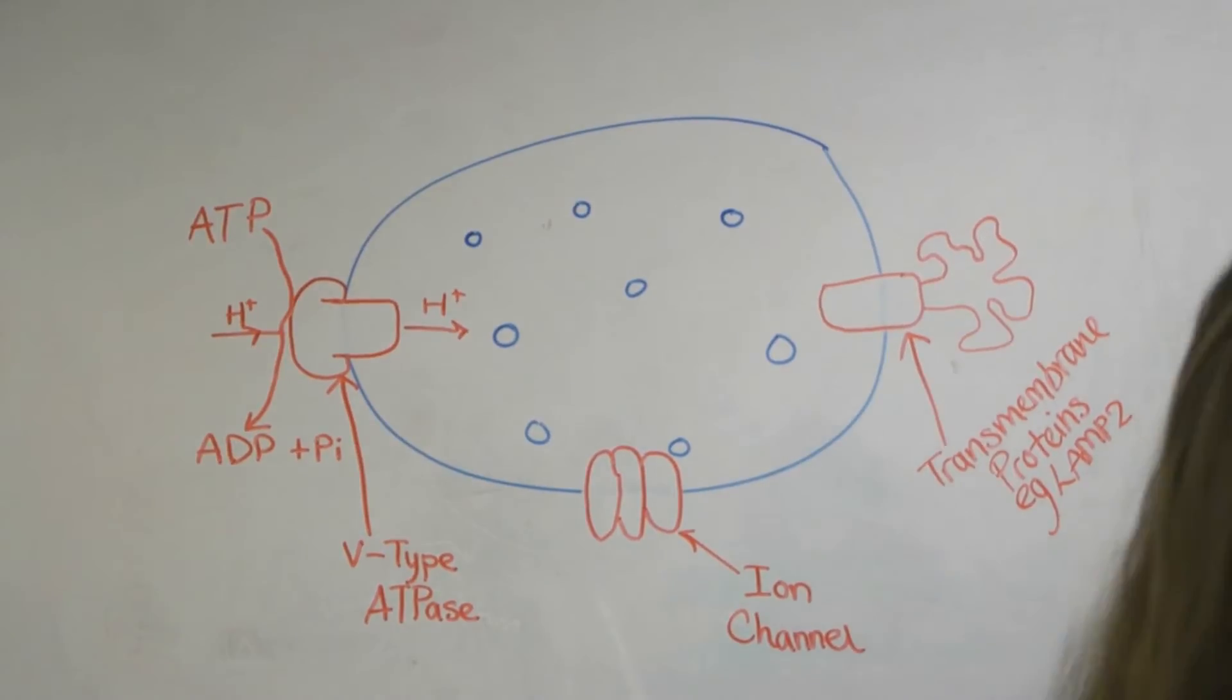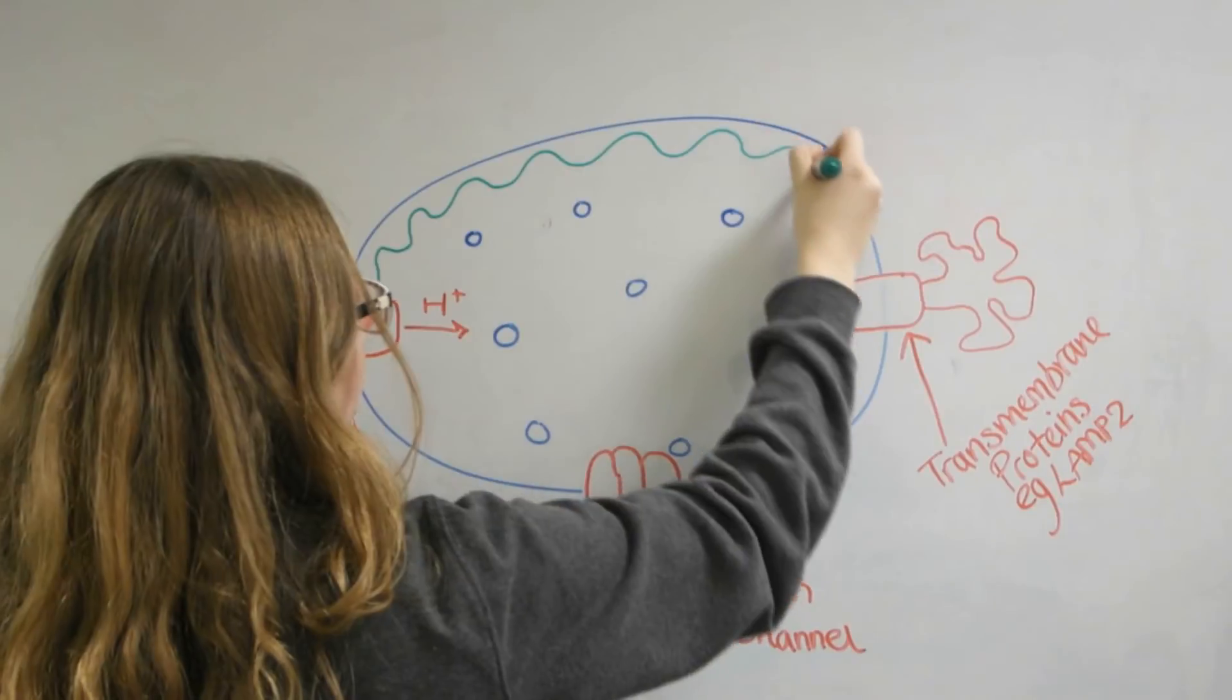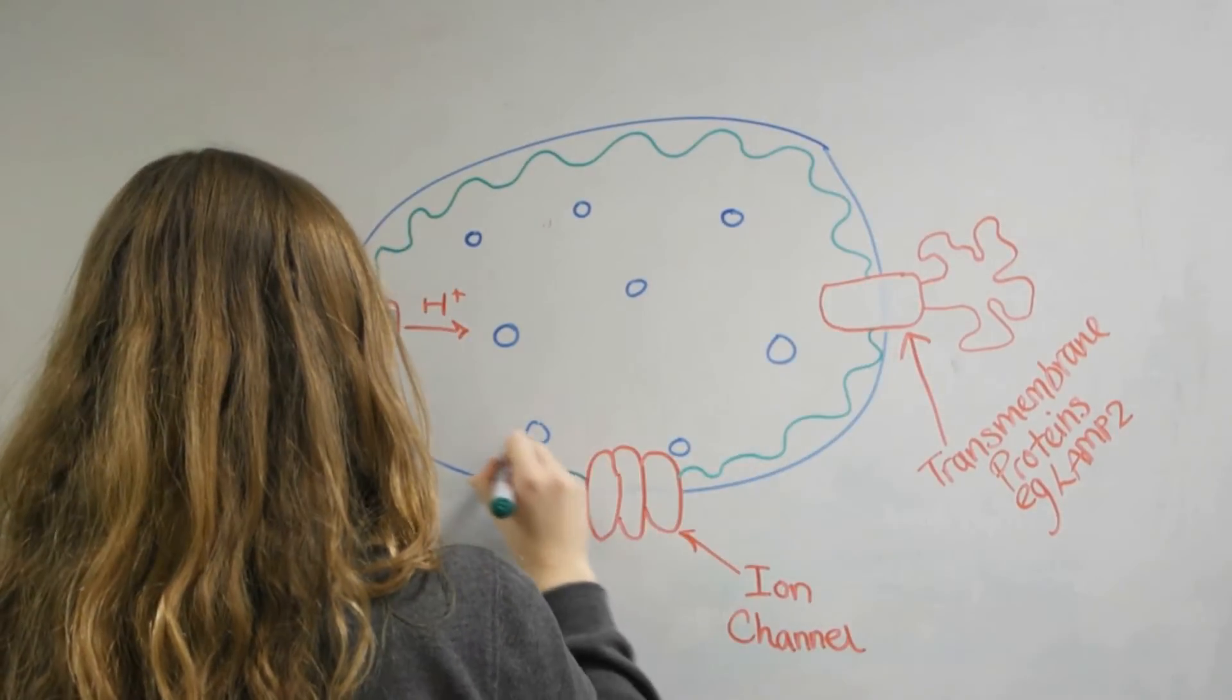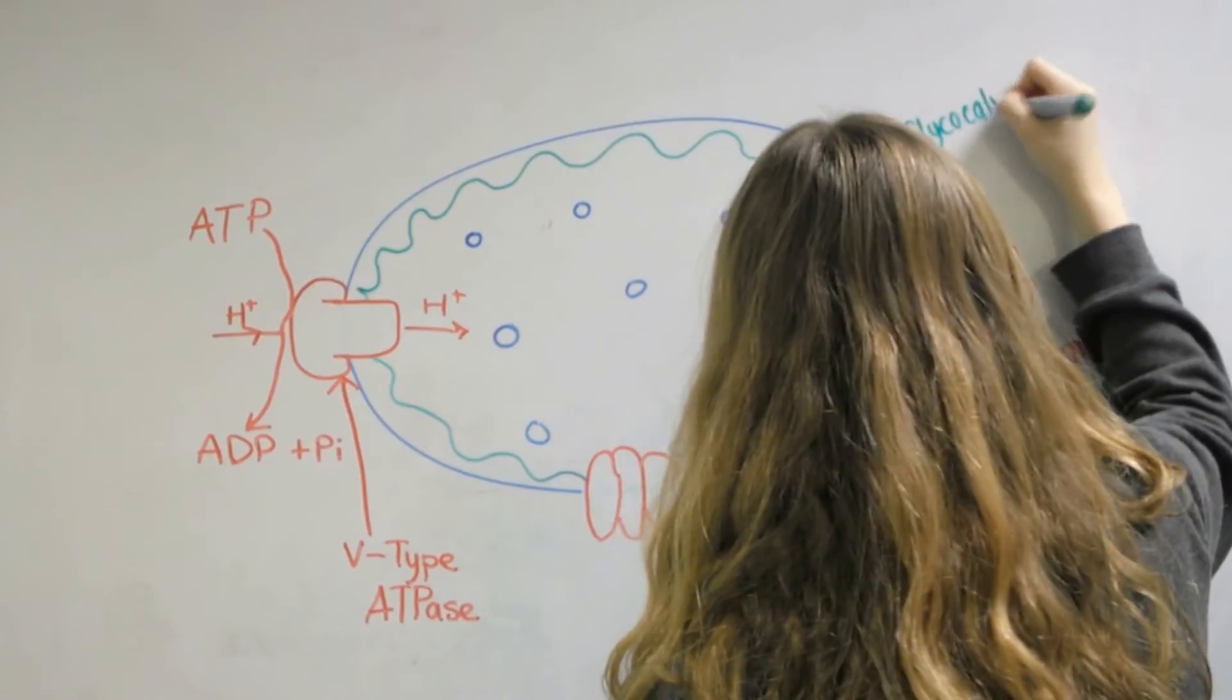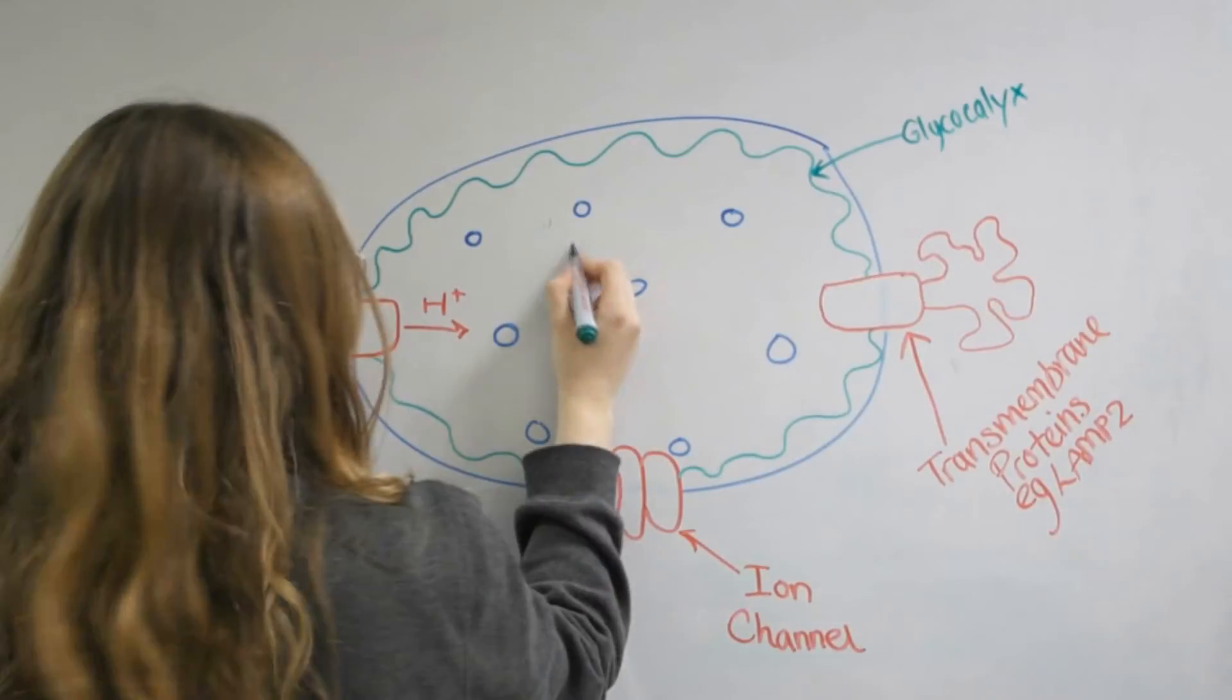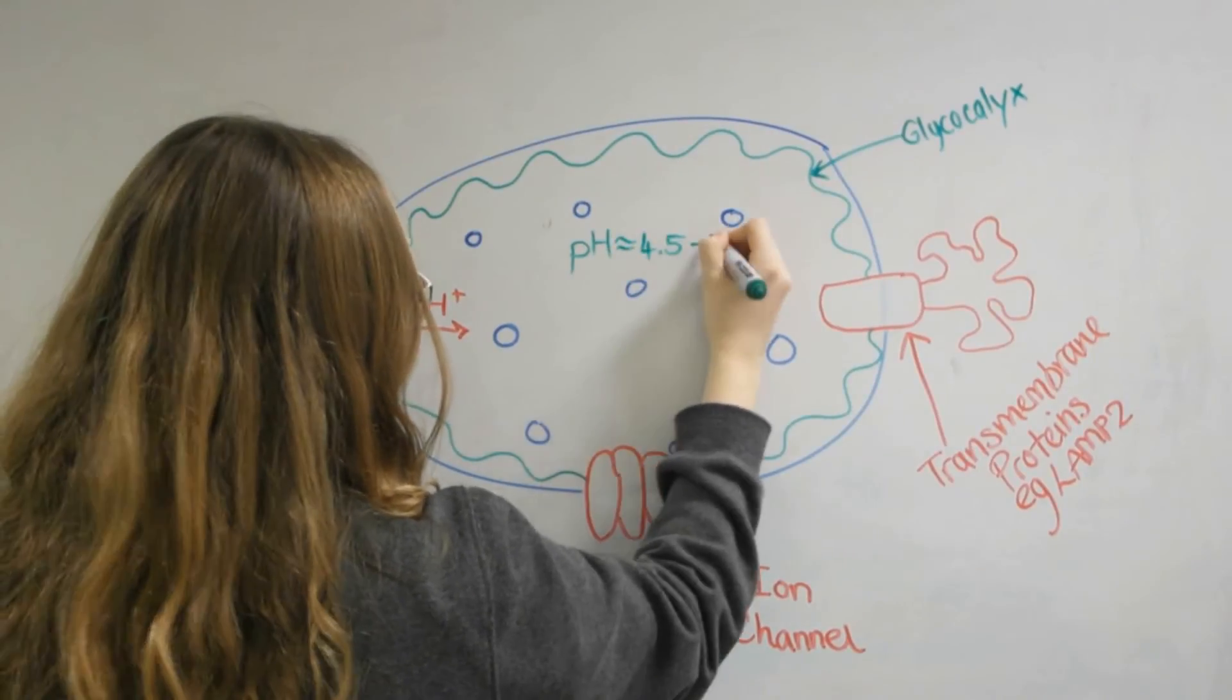The membrane itself is roughly 7-10 nm thick and appears to be protected from the activity of the enzymes within the lumen by a thick glycocalyx layer which is about 8 nm thick. It is mainly comprised of oligosaccharide side chains from the most common proteins found in the membrane, type 1 transmembrane proteins, for example lamp 2.